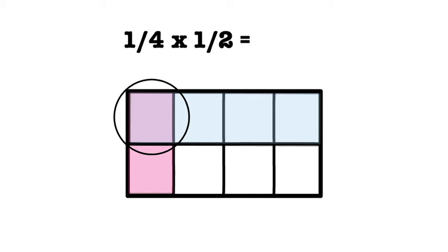We divided the rectangle into four pieces first. Then, we divided it in half horizontally. When we did this, we made a total of eight pieces. Looking back at the double-shaded or overlapping area, there is one piece out of the eight that is double-shaded. That is our answer, one-eighth.